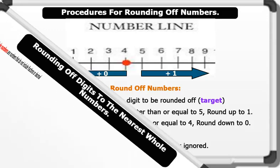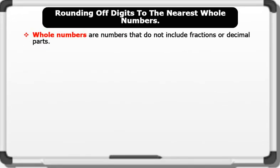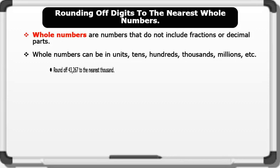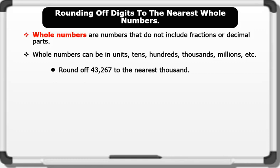Whole numbers are numbers that do not include fractions or decimal parts. Whole numbers can be in units, tens, hundreds, thousands, or millions etc. Let's see an example: round off 43,267 to the nearest thousand.